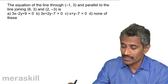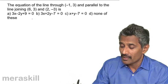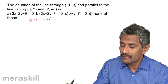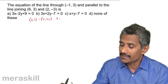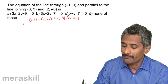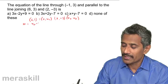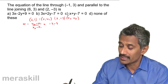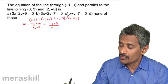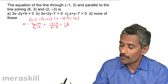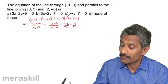We take 6 comma 3 as x1, y1 and 2 comma minus 3 as x2, y2. We find the slope m, which is y2 minus y1 upon x2 minus x1. That gives minus 3 minus 3 upon 2 minus 6, which is minus 6 upon minus 4, which equals 3 by 2.